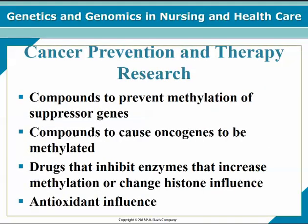In cancer prevention and therapy research, there are compounds to prevent methylation of suppressor genes and compounds to cause oncogenes to be methylated. Drugs that inhibit enzymes increasing methylation or altering histone influence — including antioxidants — may influence this process. Using epigenetic strategies combined with other methods for cancer prevention and treatment is likely to provide a realistic component to fighting most cancers.